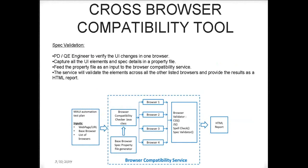Everything explained so far is only for functional testing — verifying that clicking a particular button takes you to the next page. But we also want to validate whether a button's particular width and length are as expected, or any page component for that matter. For that, we've developed a tool called the cross-browser compatibility tool.